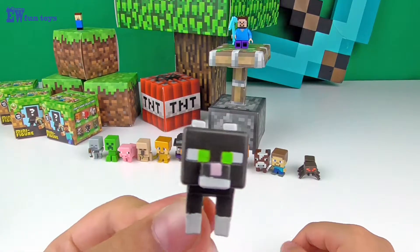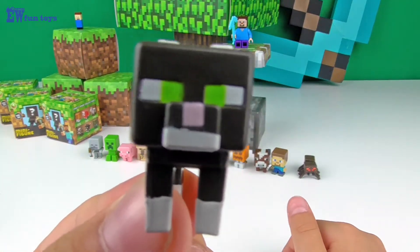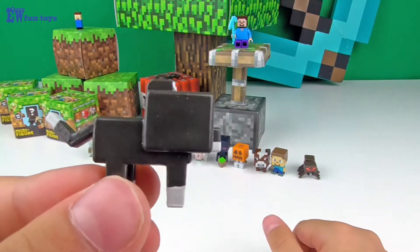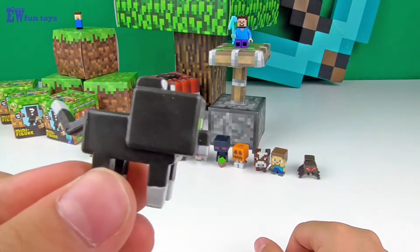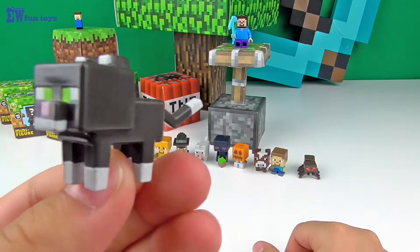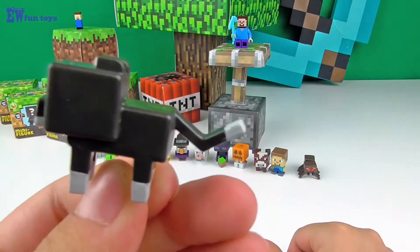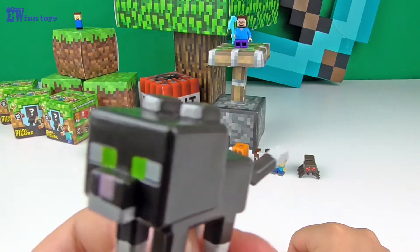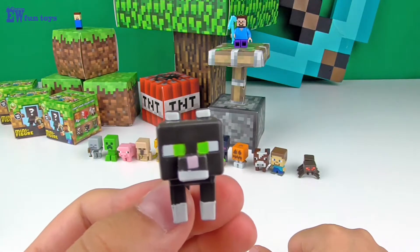Cat. This creature is a tamed ocelot. You can tame it using fish. This cat comes in three different colors: tabby, black, or white with gray stripes.